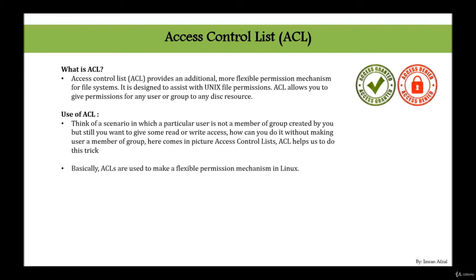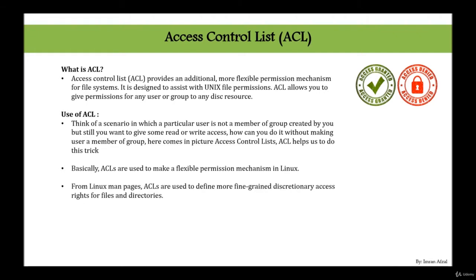ACLs are used to make a flexible permission mechanism in Linux. From Linux man pages, ACLs define more fine-grained discretionary access rights for files and directories. The commands to assign and remove ACL permissions are setfacl and getfacl — set file ACL and get file ACL. getfacl gives you information about the existing permissions of a file, while setfacl allows you to set permissions the way you want.